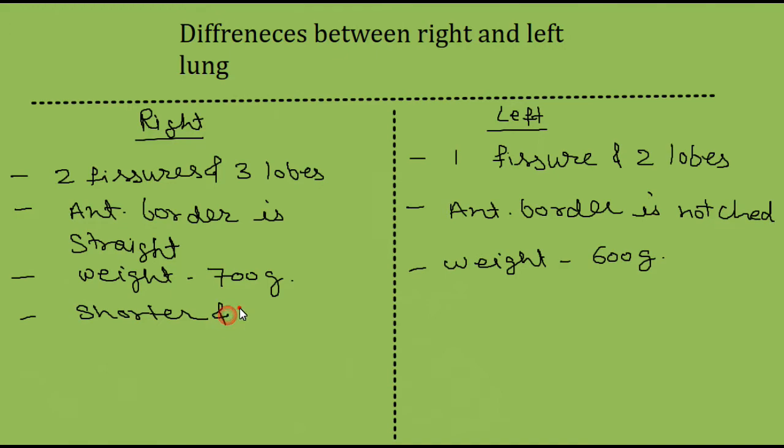The right lung is shorter and broader than the left. The left lung is longer and narrower.